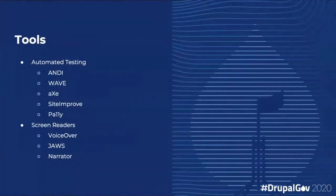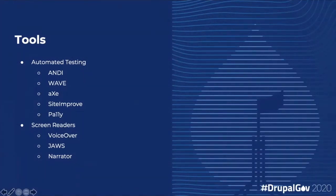To wrap up quickly on tools: for automated testing, I use ANDI — it's a little bit more manual, an open source tool that came out of the Social Security Administration in the U.S. — I definitely recommend trying it out. You've probably also heard of WAVE, Axe through Deque, Siteimprove, and Pally. For screen readers, there's VoiceOver for Apple — also on iPhone, not just on computer — JAWS, which is a paid screen reader for PC that many people love, and Narrator, which is the Windows screen reader. The top group is for automated testing and the bottom for manual.